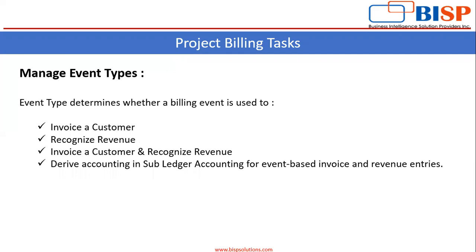Let's start with the event types. In the event type, it determines whether a billing event is used to invoice a customer, to recognize the revenue, or to use it for both — invoicing a customer and recognizing the revenue. The fourth option is to derive accounting in subledger accounting for event-based invoice and revenue entries.